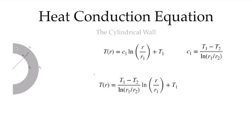Here is our expression for temperature as a function of radius through our cylindrical wall. Notice that this function is no longer linear. We have a logarithmic variation of the temperature with respect to r. Had we used the other boundary condition to solve for c2, we would have found an expression that gives the exact same solution, but looks different.